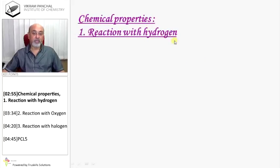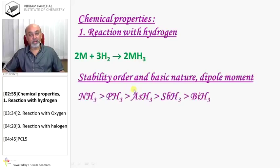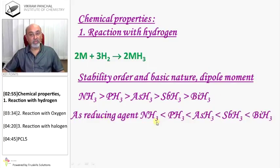Chemical Properties: Reaction with Hydrogen. These elements react with hydrogen and produce hydride MH3. Stability order of hydrides and their basic nature and dipole moment from ammonia to bismuthine: dipole moment, stability, and basic nature decreases. But as reducing agent, ammonia is the weakest reducing agent and BiH3 is the strongest.